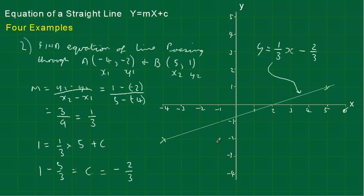You might just be asked to do this algebraically without drawing anything. The way you do it is find the gradient first, put everything into one of the points in this equation, and then work out what the intercept is.